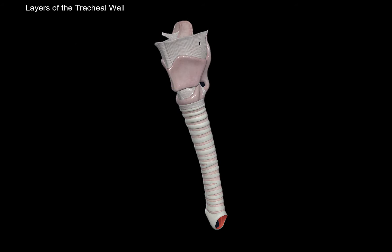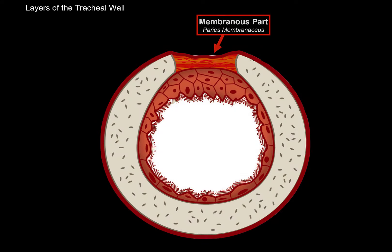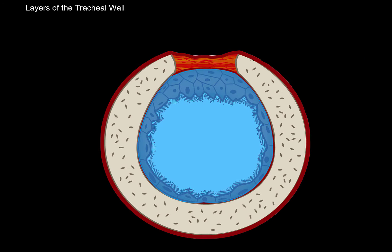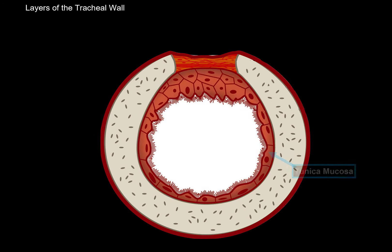Now let's look at the layers of the tracheal wall by making a transverse cut. We're still going to have the membranous part back here and the tracheal cartilages. I want to focus a little bit on the tracheal walls, with the inner walls highlighted in blue. The innermost structure we'll find is the tunica mucosa.